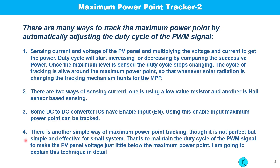The fourth technique, which I am going to explain in this project, is another simple way of maximum power point tracking. Though it is not perfect, it is simple and effective for small systems. This is to maintain the duty cycle of the PWM signal to keep the PV panel voltage just below the maximum power point. I am going to explain this technique in detail.